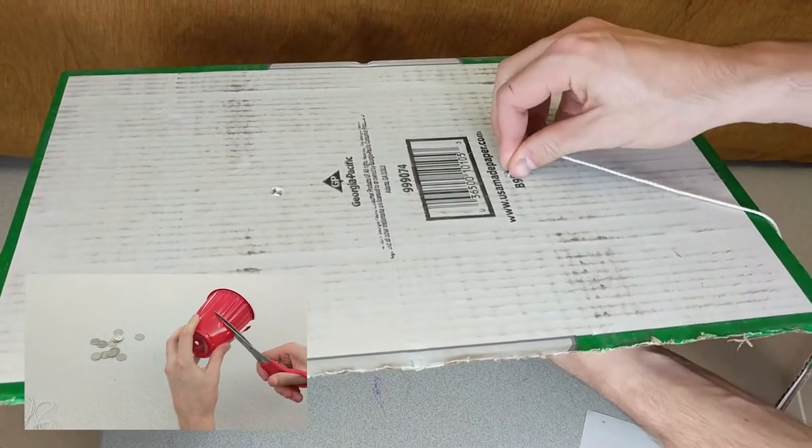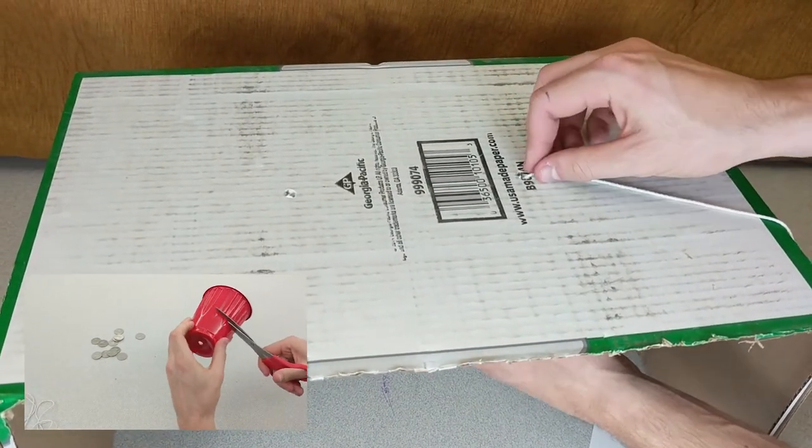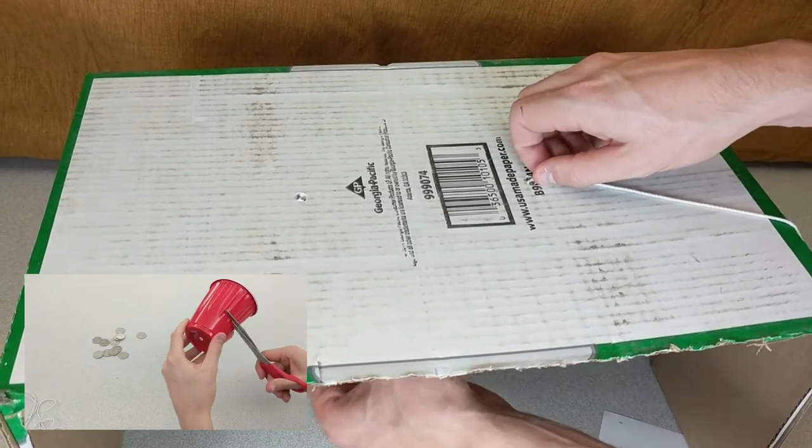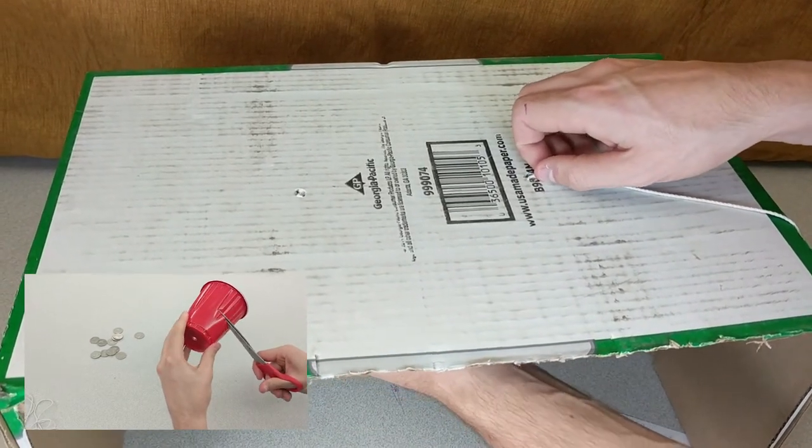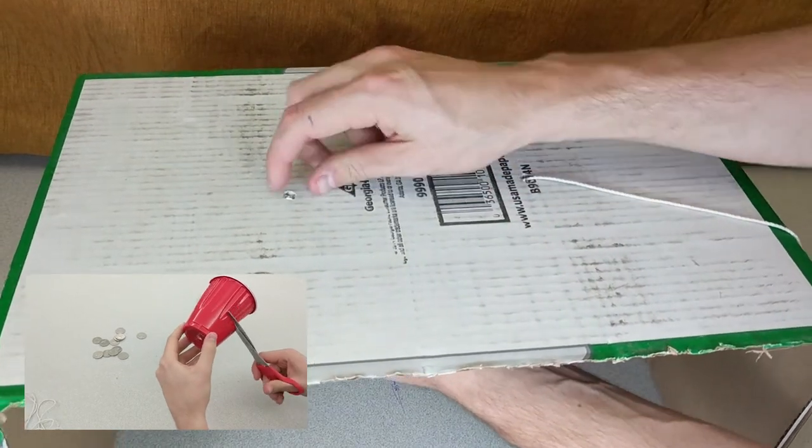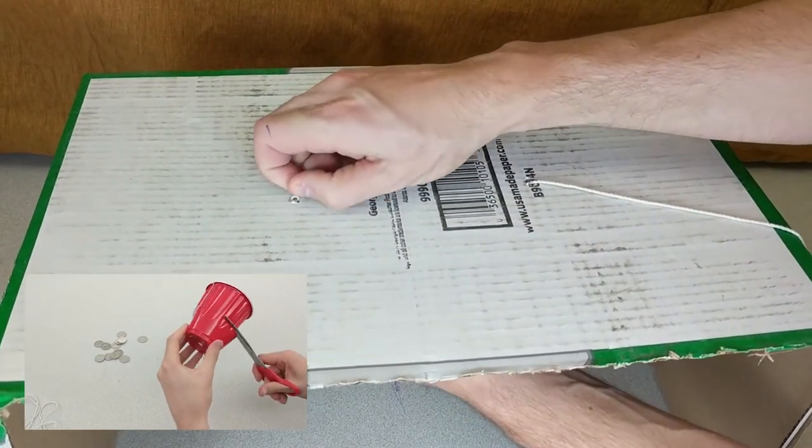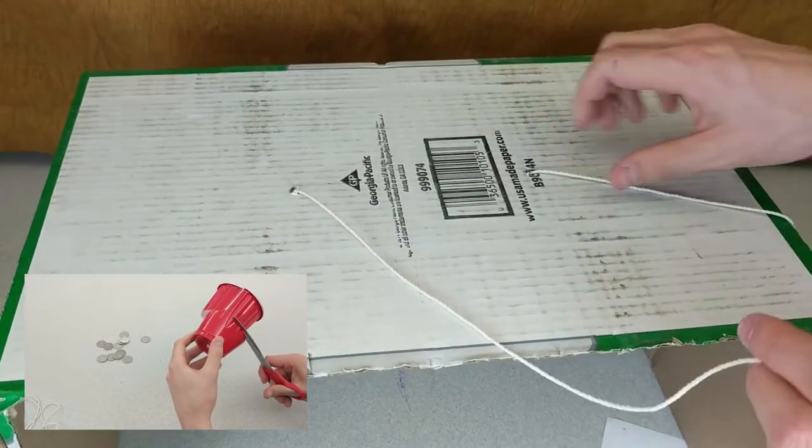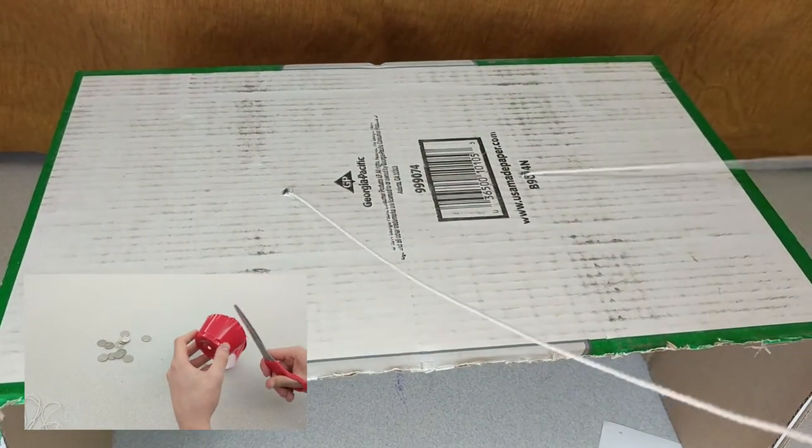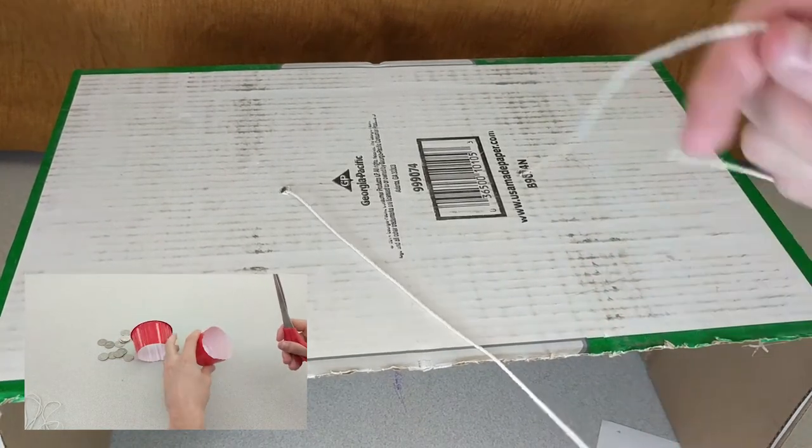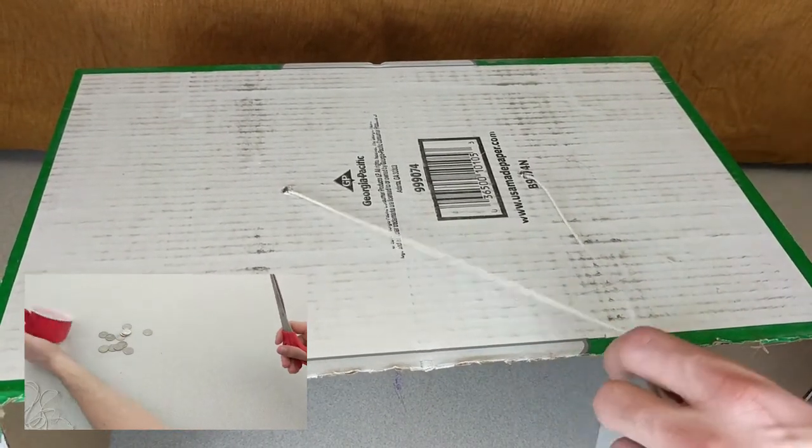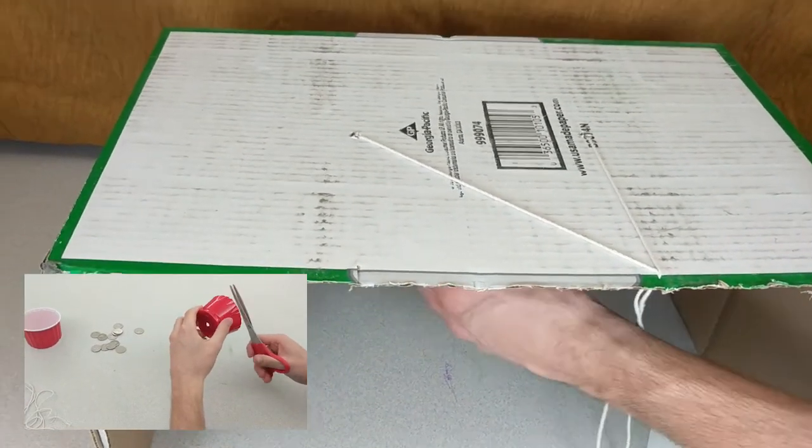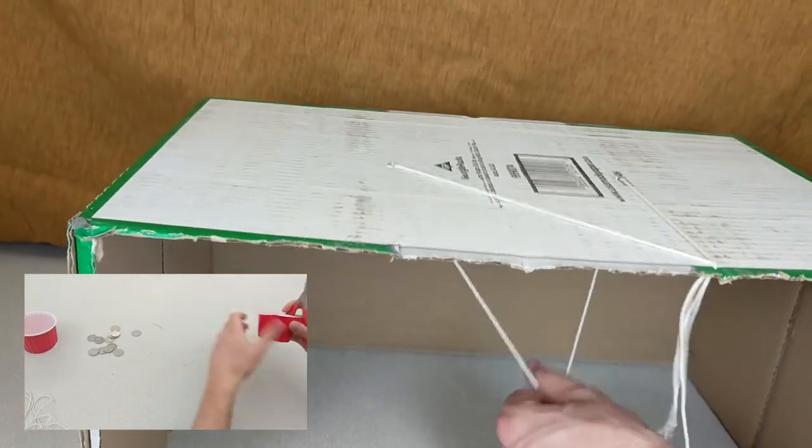Step two, feed a length of string down into one of the upper holes and then back up through the other upper hole. This may be tricky. It's good to make sure that the ends of the string are secured and that there's some slack underneath the lid.